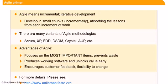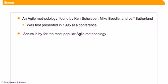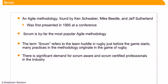So what is Scrum? Scrum is an agile methodology founded by Ken Schwaber, Mike Beadle, and Jeff Sutherland, and was presented in 1995 at a conference. It is by far the most popular framework in the industry. The term 'Scrum' refers to the team huddle in rugby that happens just before the start of a game, and the Scrum methodology follows practices similar to the sport. In recent years, there has been significant demand for Scrum awareness and certification.